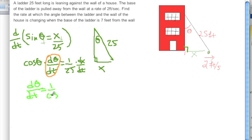Now what? Well, remember we want to know what the rate of change in theta with respect to time is at x equals 7. So let's find theta when x equals 7.